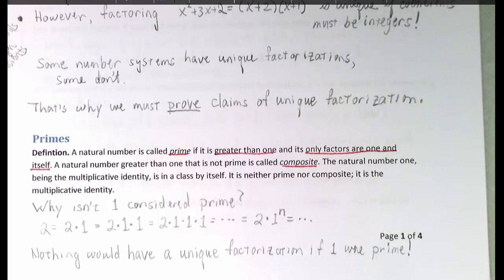Now, I've encountered this question before. Why isn't 1 considered a prime? Well, suppose we thought that 1 was a prime. Then we could factor 2 as 2 times 1. Another prime factorization of 2 would be 2 times 1 times 1, and 2 times 1³, and in fact, 2 times 1 to any positive integer power. So, if 1 were considered a prime, then nothing would have a unique factorization. So, we don't want to call 1 a prime because if we did, the unique factorization theorem for the natural numbers would be lost.